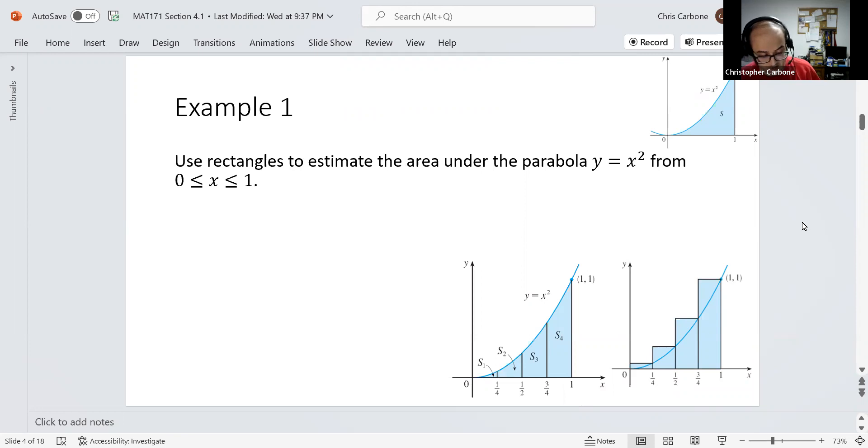To help further show this, let's use rectangles to estimate the area under the parabola y equals x squared, from the values of 0 to 1. We have a region S in the upper right-hand corner, we have y equals x squared here in blue, that curve, and we go from 0 to 1, and that's a region S. We could break that region S up into, in this case, 4 rectangles.